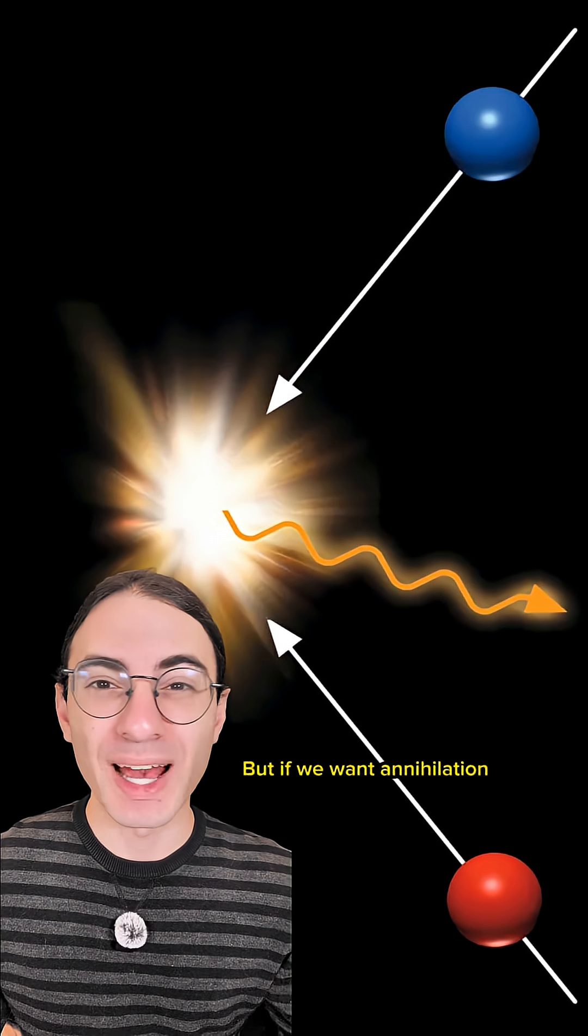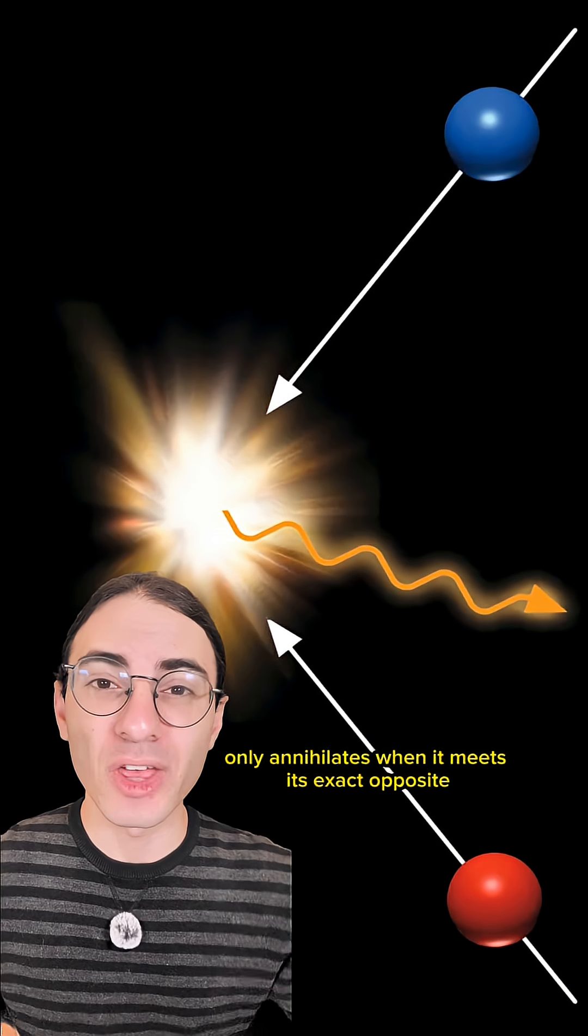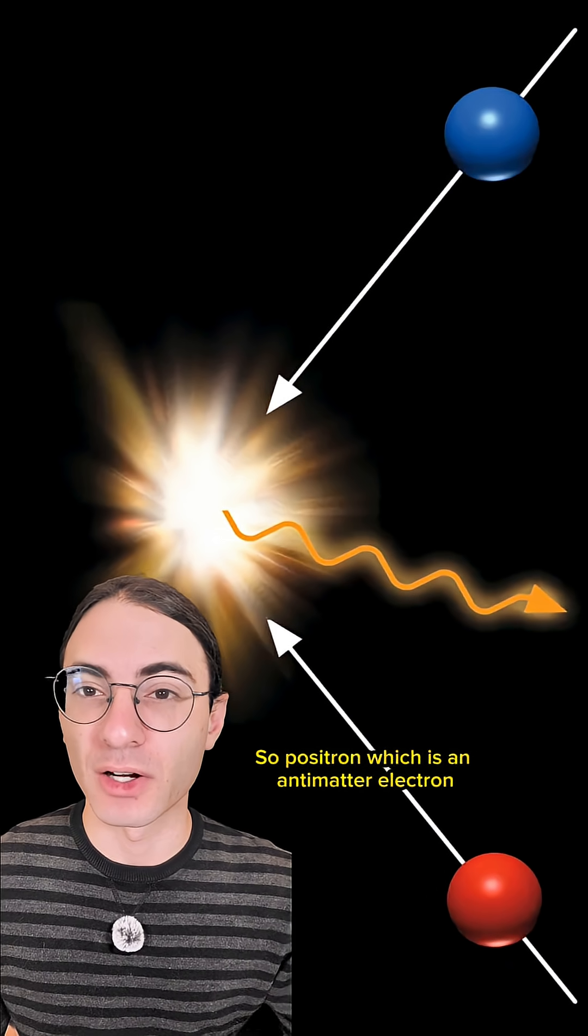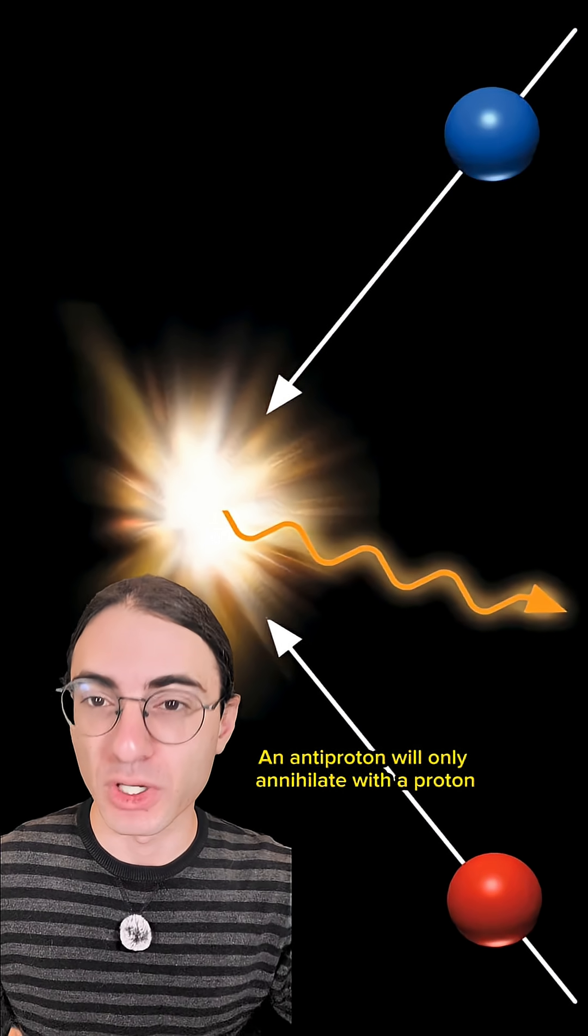But if we want annihilation, we have to be a little careful about what kind of antimatter we have. Antimatter only annihilates when it meets its exact opposite. So a positron, which is an antimatter electron, will only annihilate with electrons. An antiproton will only annihilate with a proton.